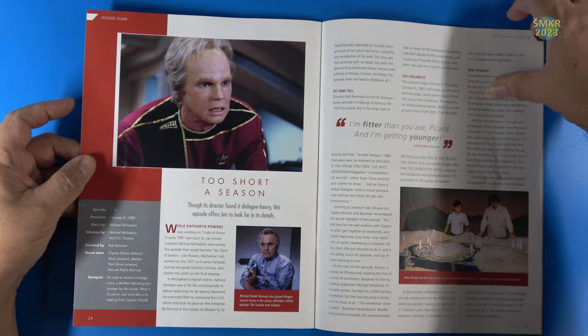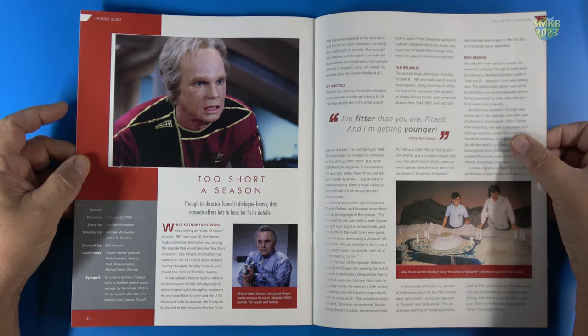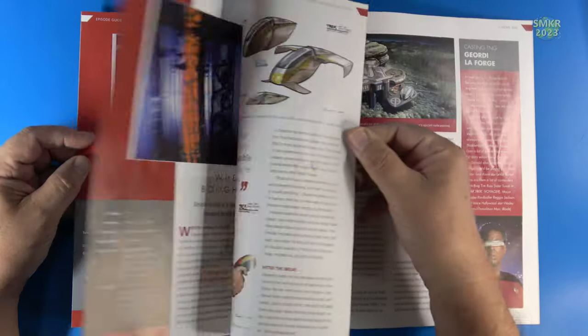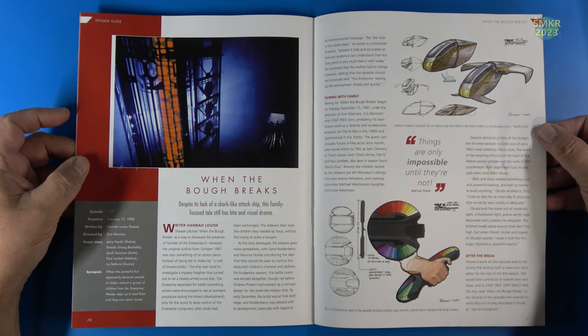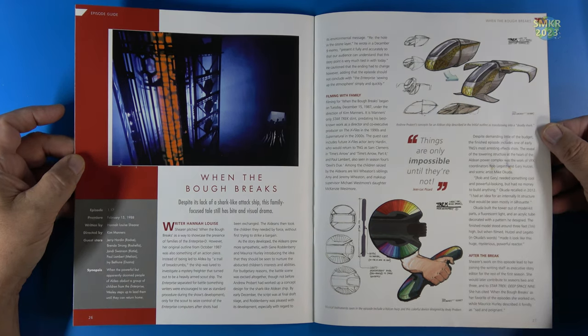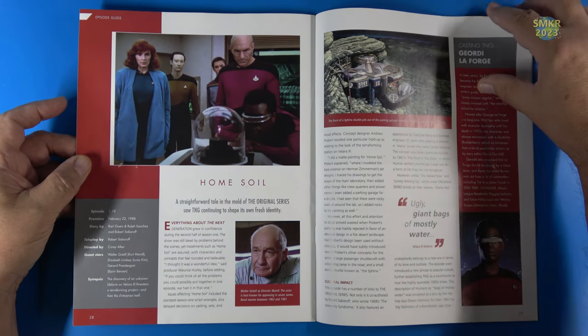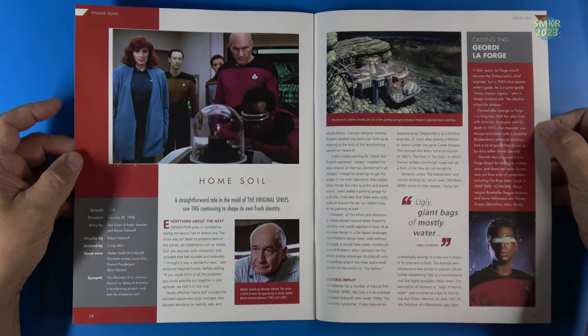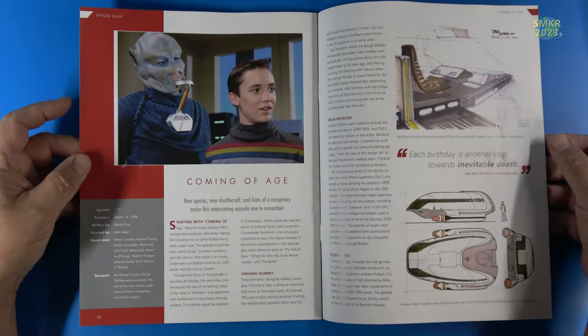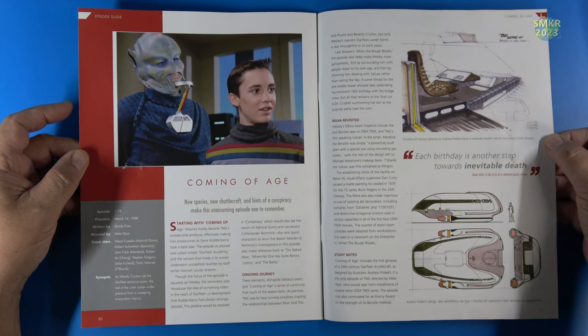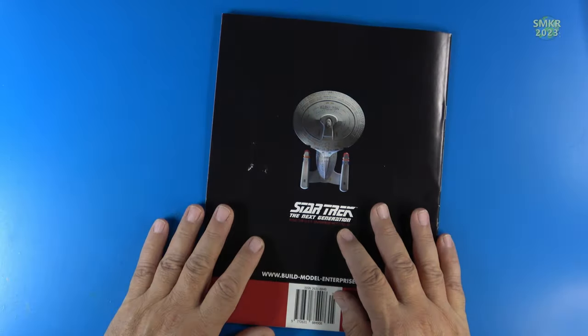Season one, episode 16, Too Short a Season. Season one, episode 17, When the Bough Breaks. Season one, episode 18, Home Soil. And lastly, season one, episode 19, Coming of Age. Let's go ahead and look at the parts next.